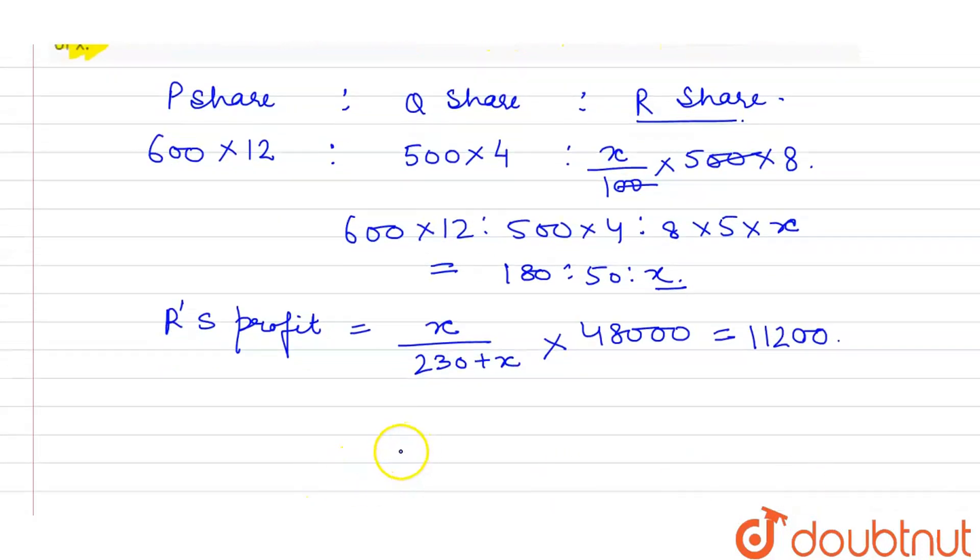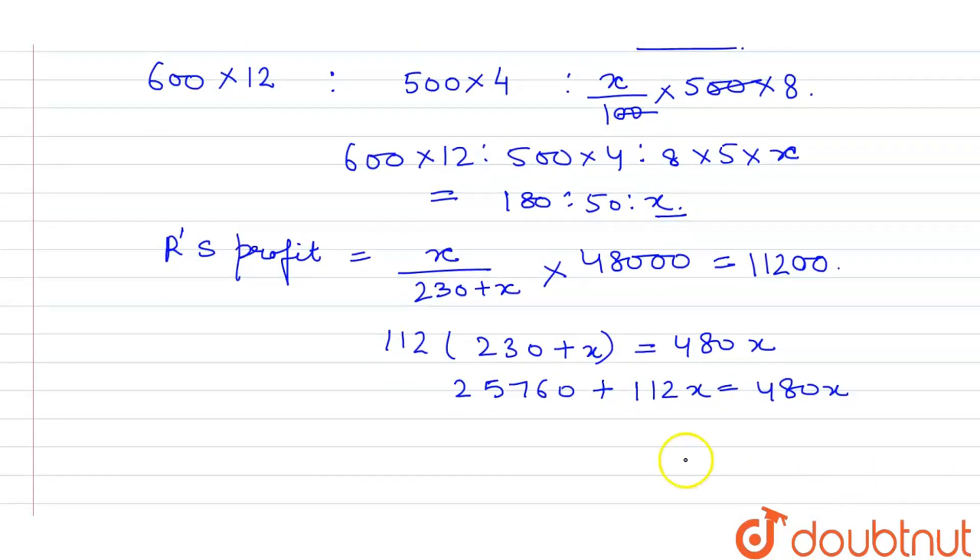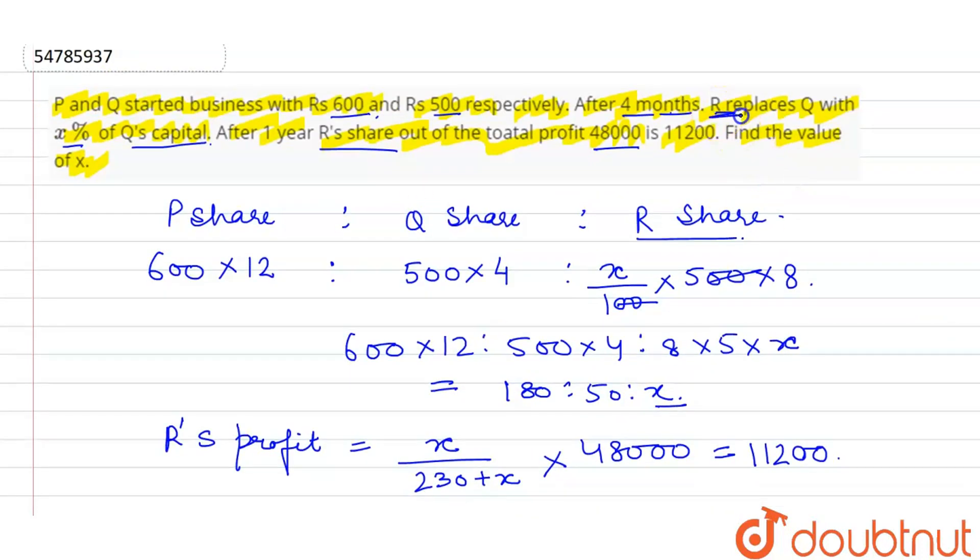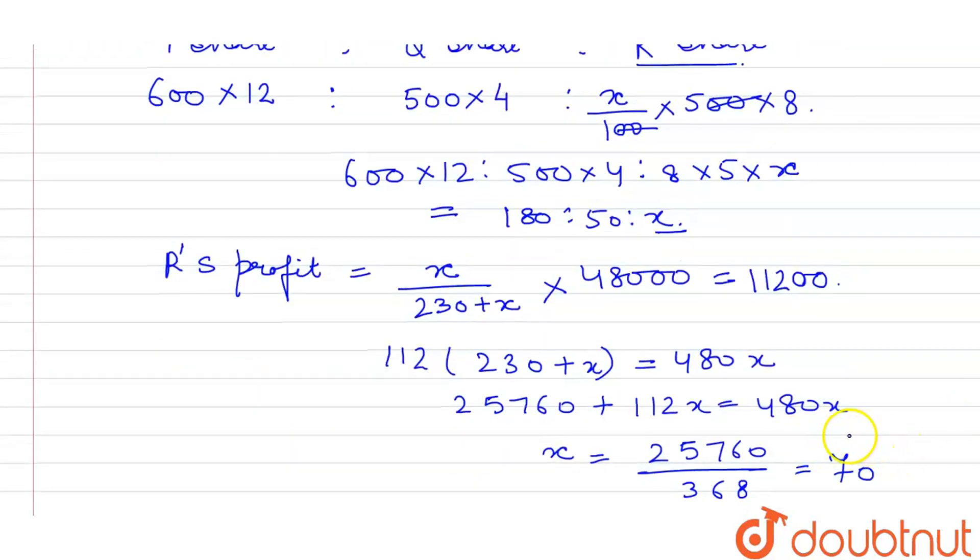Now let's solve this. 112 into 230 plus X is equal to 480X. This will be 25,760 plus 112X is equal to 480X. We will solve this. X will be 25,760 upon 368, which is 70. So 70% of Q's capital R has invested. X is equal to 70%. Thank you.